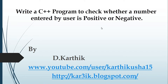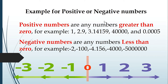Before entering into the topic we should know what is meant by a positive number and what is meant by a negative number. The positive numbers are the numbers greater than 0, for example 1, 2.9, etc. Negative numbers are any numbers less than 0, for example minus 2, minus 100, minus 4.156, etc.